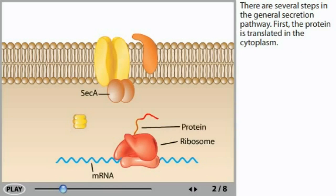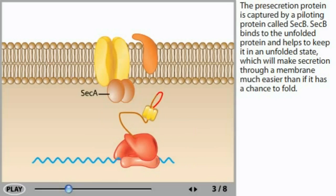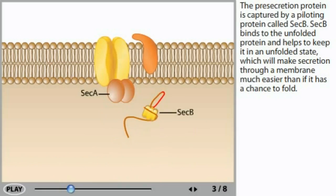First, the protein is translated in the cytoplasm. The pre-secretion protein is captured by a piloting protein called SecB. SecB binds to the unfolded protein and helps to keep it in an unfolded state, which will make secretion through a membrane much easier than if it has a chance to fold.